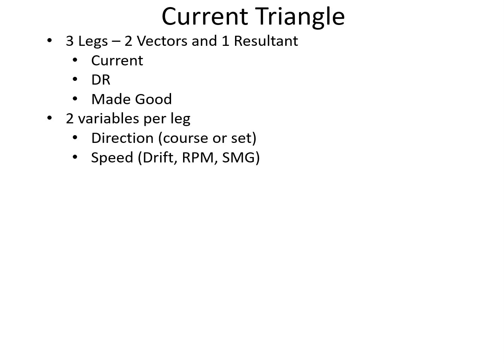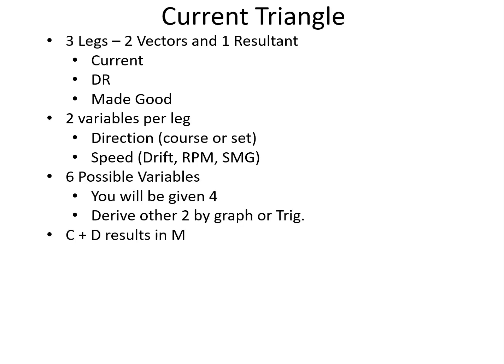So the current triangle is composed of three legs: C, D, and M. The current plus the DR results in the made good. Each of these three legs - current, DR, made good - has two variables. There is a direction variable, like course or the direction of the current set, and then there is a speed. It could be called drift if it's talking about the current, RPM if it's on the DR line, or speed made good if it's on the made good line. That means for three legs of a triangle, two variables each leg, there are six variables in a current triangle.